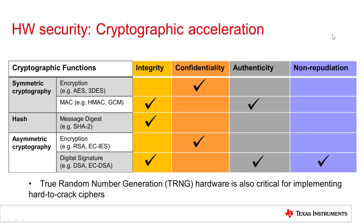We're going to cover these three areas in much more detail in the next module. But for now, when you see a suite of cryptographic functions, you'll see some such as SHA-2 accelerators covering secure hashing, AES accelerators covering symmetric cryptography, and accelerators such as RSA or elliptic curve (EC) covering asymmetric cryptography. Another piece of hardware that's extremely important for supporting efficient cryptography is a true random number generator, which is also very important to have on the device.